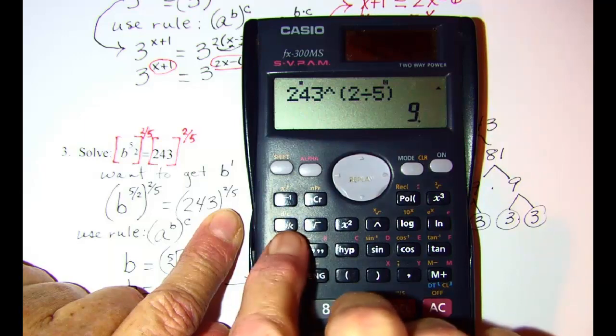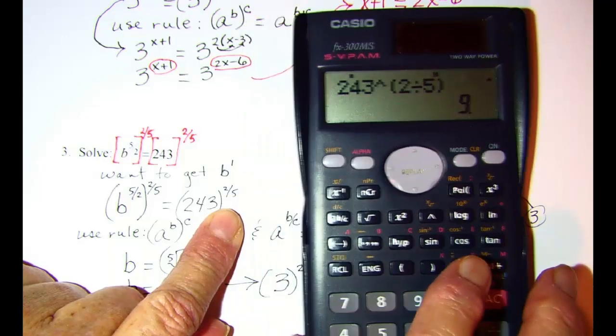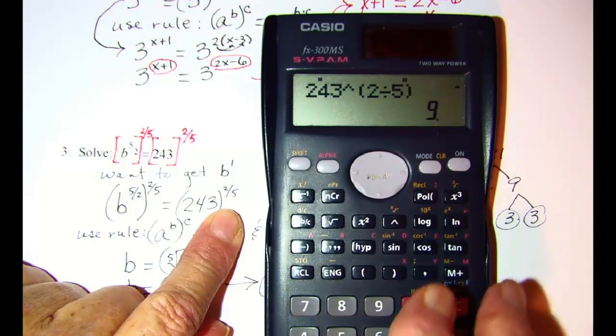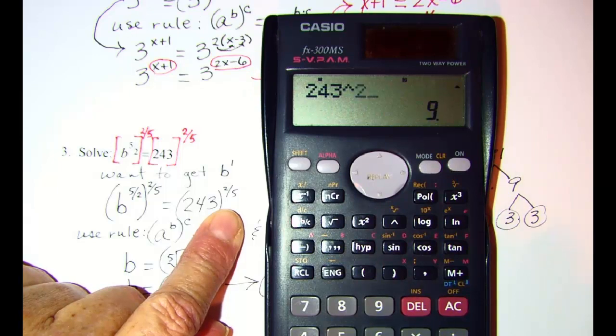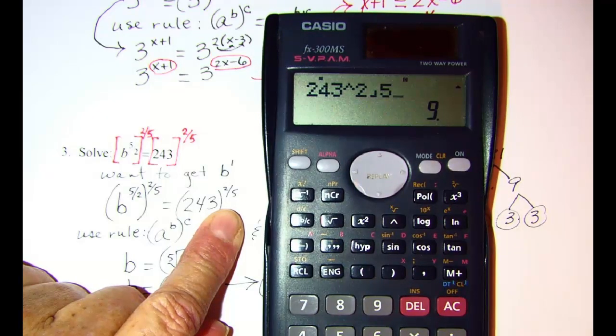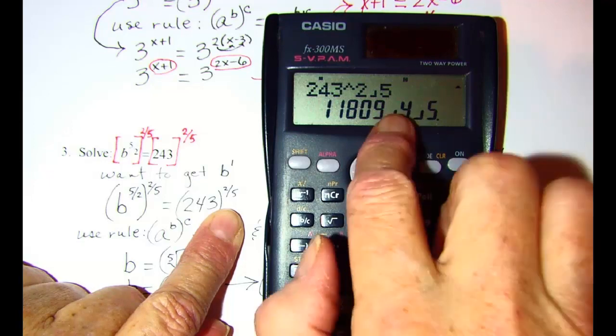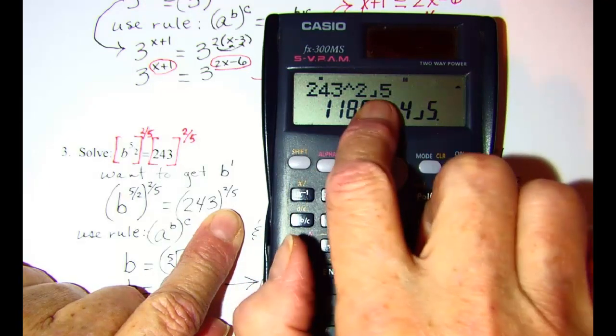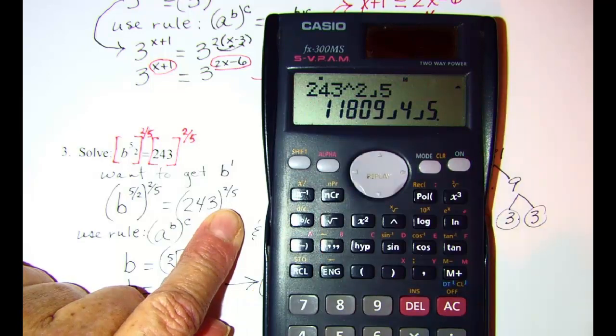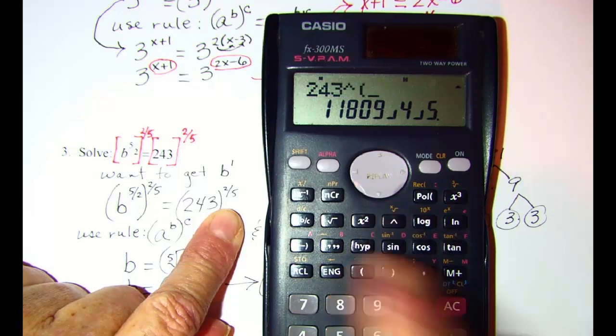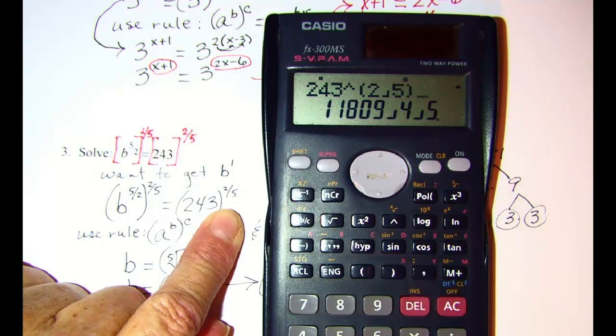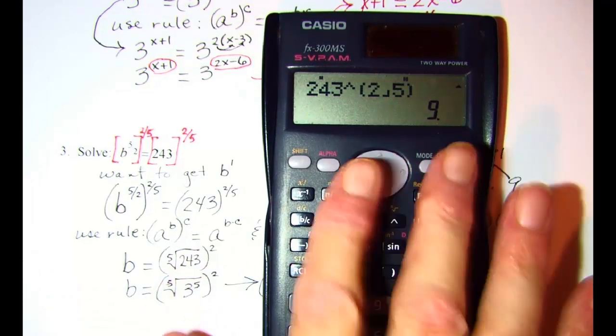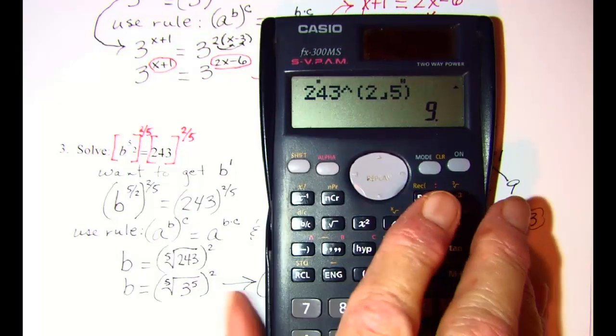I think this calculator has a fraction key right here. So let's try that one as well: 243 raised to the 2 over 5. Let's see if that gives me 9. No it does not. Because again you have to enclose the exponent in parentheses. So let's do 243 raised to the (2 over 5). Let's see if that's 9. Right. So you have to be aware of what your calculator will do for you.